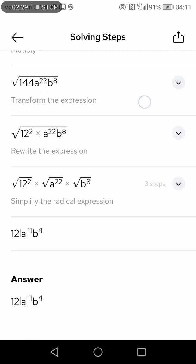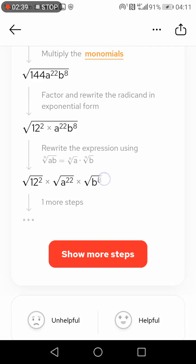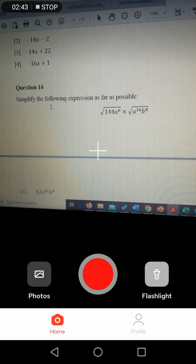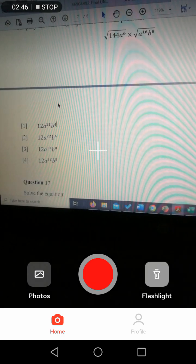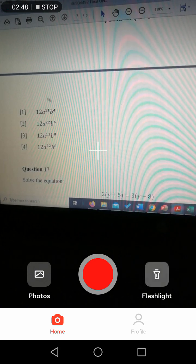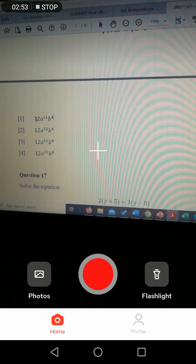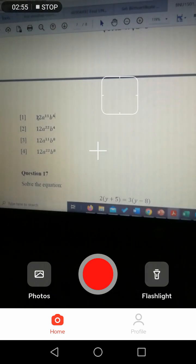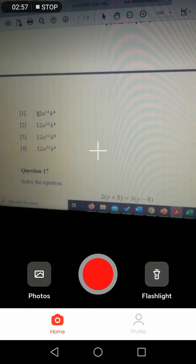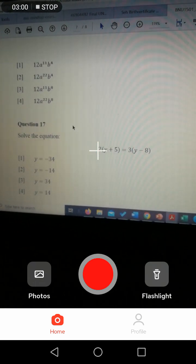So these are all the steps until the answer says 12a to the power of 11b to the power of 4. 12a to the power of 11b to the power of 4 was the first one, so my answer will be number one. Let me show the last one.